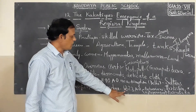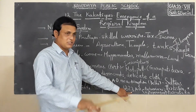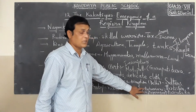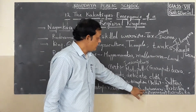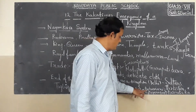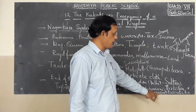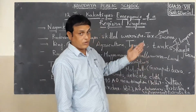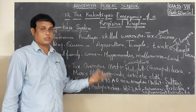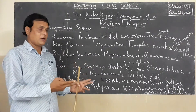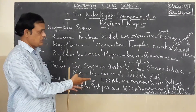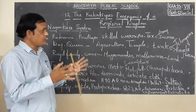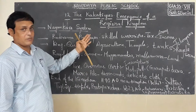After 1323 AD, in the same area, two other powerful kingdoms arose: Bahamani and Vijayanagara kingdom. After the fall of the Kakatiya kingdom, these two kingdoms came up in South India. The Kakatiya kingdom was one of the most famous kingdoms.